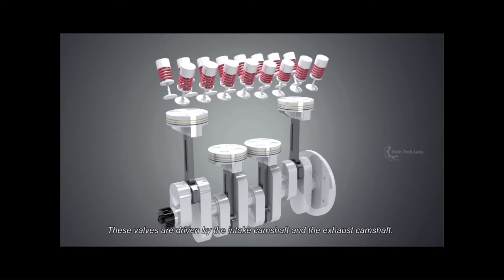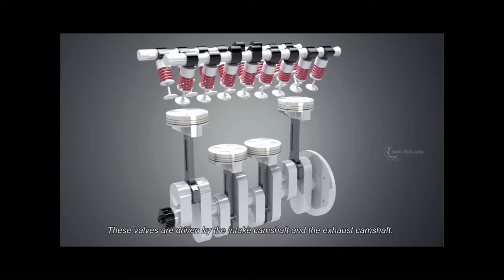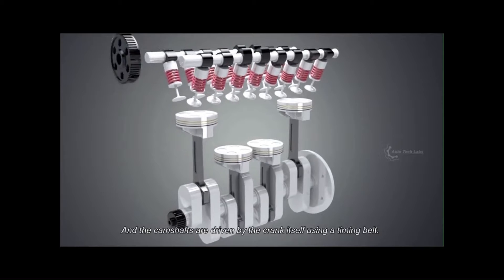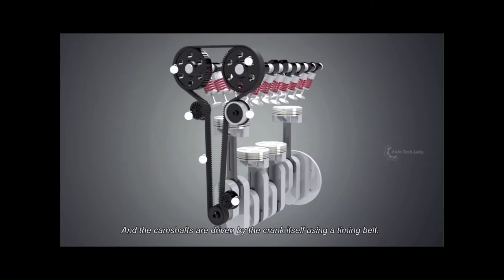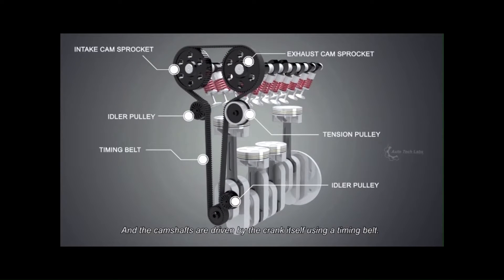Poppet valves. These are the most common type used in automotive engines. They consist of a valve stem and a disc, which pops up and down to allow or block flow.